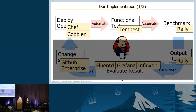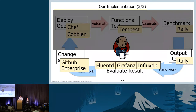Let me explain our solution. Deployment, functional test, and benchmark are fully automated using open source software: Chef, Cobra, Tempest, and Rally. Evaluating results is one of the challenging parts — it's tough to fully automate. So we developed a visualization system to make evaluation easier, using open source software: Fluentd, Grafana, and InfluxDB. I'll talk about the whole process in this session.